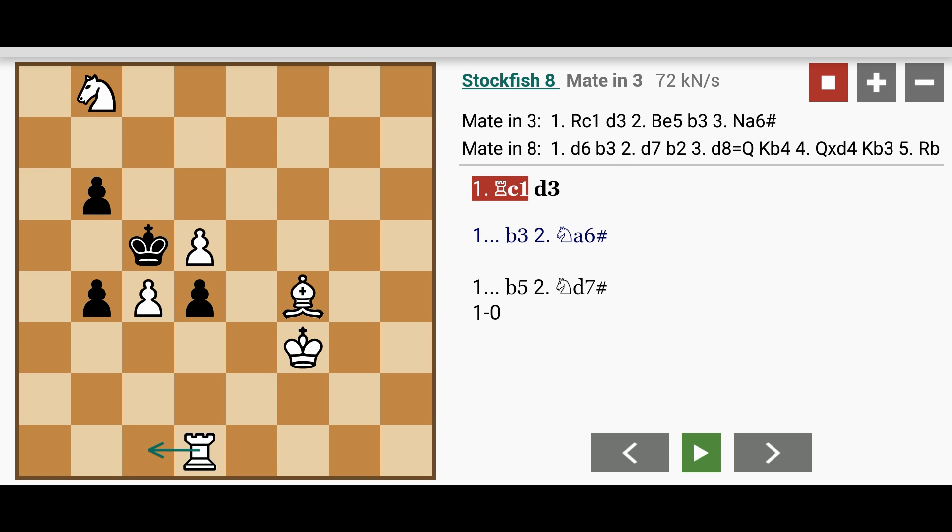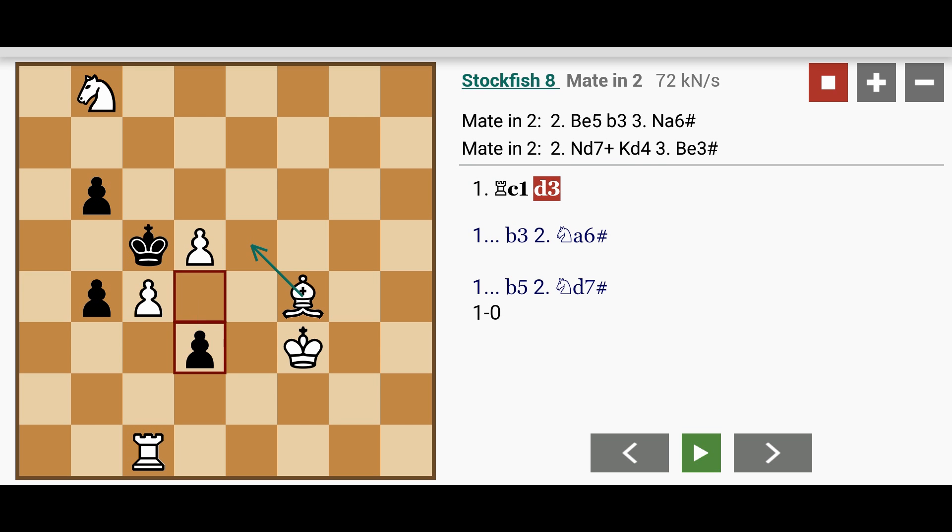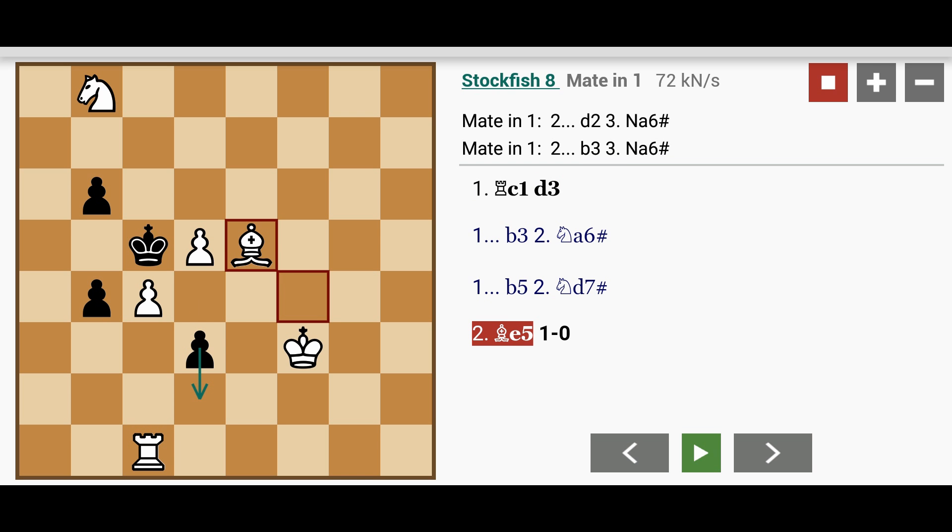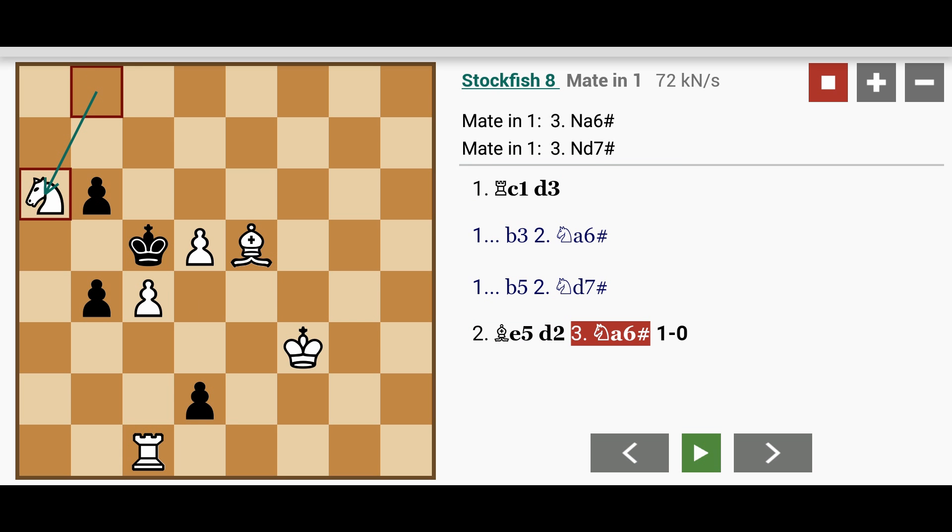In any case, after white plays rook to c1, black plays d3. And then there are two ways to win. For example, white can play bishop to e5. Yet another quiet move. And then whatever black plays here, for example, even d2, white can win with knight to a6, mate.